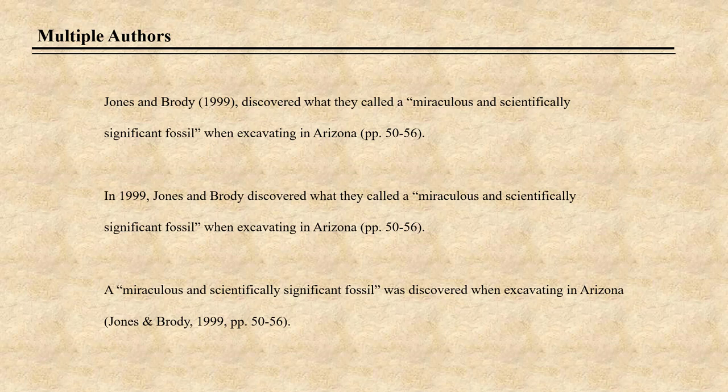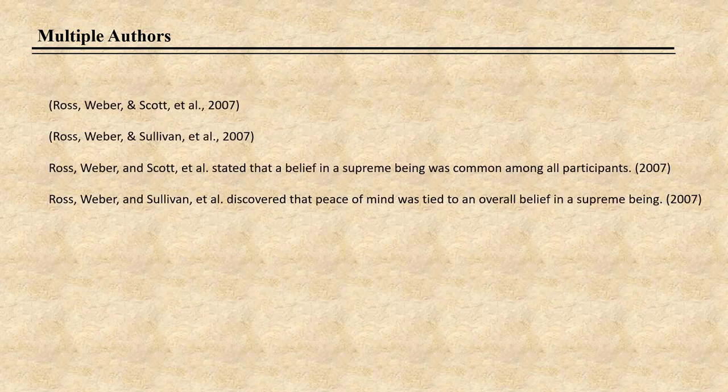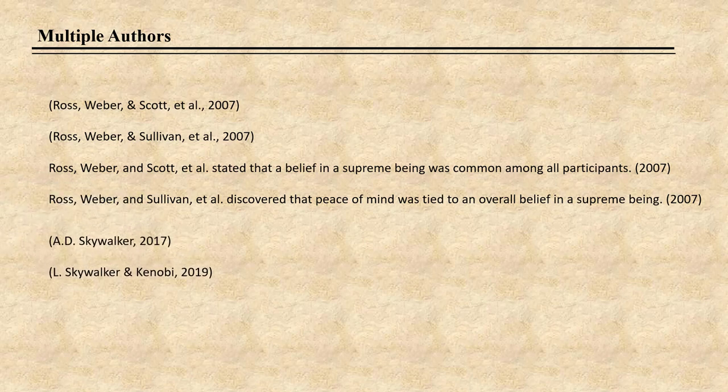Use an ampersand when citing in parentheses and the word 'and' when within the text. Here are some examples. To avoid ambiguity when the in-text citations of multiple works with three or more authors are shortened to the same form, write out as many names as needed to distinguish the references and abbreviate the rest to et al. in every citation. Et al. is plural, meaning 'and others.' If the first authors of multiple references share the same surname but have different initials, include the first author's initials in all in-text citations, even if the year of publication differs. Initials help avoid confusion within the text and help readers locate the correct entry in the reference list.